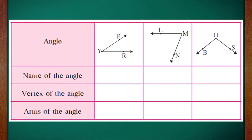We did not study only types of angles. We also studied how to name them, what is a vertex and what are arms of the angles. So in this table, we are going to name the angles, the vertex and the arms of the angles. The first angle we see is angle PYR. The name of this angle can be written as angle PYR or angle RYP. We are supposed to start naming this angle from one corner or the arrowed part and then go along with the line.